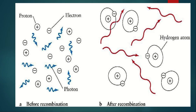This illustration shows us the process before recombination — protons and electrons were present in the universe at that time. Nucleosynthesis was continuously happening before recombination, forming atomic nuclei. Then the protons, electrons, and nuclei combined to form our atoms — the hydrogen and helium atoms. After recombination, hydrogen atoms and helium atoms were present.